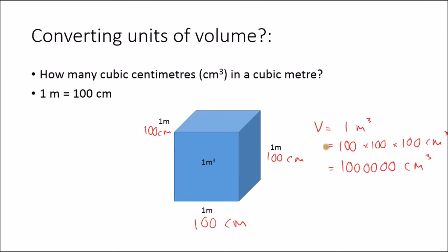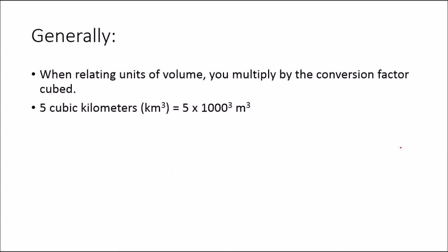Because our conversion factor between meters and centimeters is 100, we see that conversion factor cubed. So generally, when relating units of volume, you multiply by the conversion factor cubed. For example, 5 cubic kilometers in cubic meters is 5 times 1,000 to the power of 3, because there are 1,000 meters in a kilometer. So that is 5 billion cubic meters.